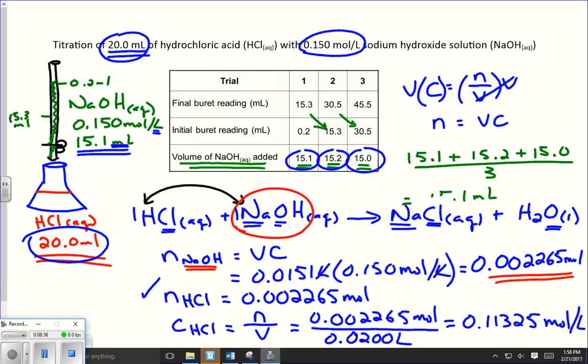So we want three significant digits. So to write this answer with three significant digits, I would just write this as 0.113 moles per liter. And that would give me my final answer. That was the whole point in doing the problem, is to come up with a concentration of hydrochloric acid.